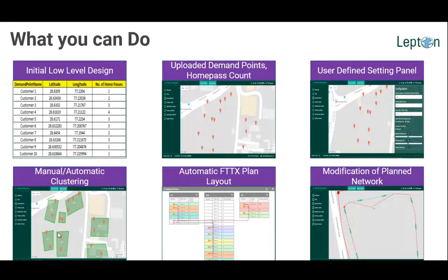Once the clustering is done, it goes to the next step of connecting all the customers — putting the ONTs, drop cables, and doing the necessary filtering and splicing all the way up to the OLT, including port-to-port connectivity. Once all of that is done, you always have a choice to go and modify the network if some modifications are required. We are going to demonstrate the whole solution in a short while.